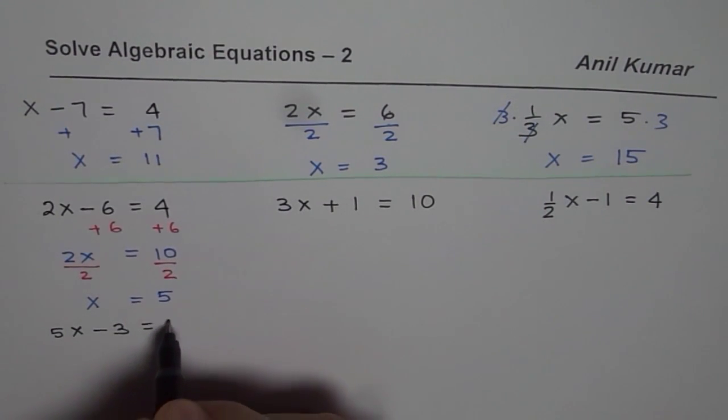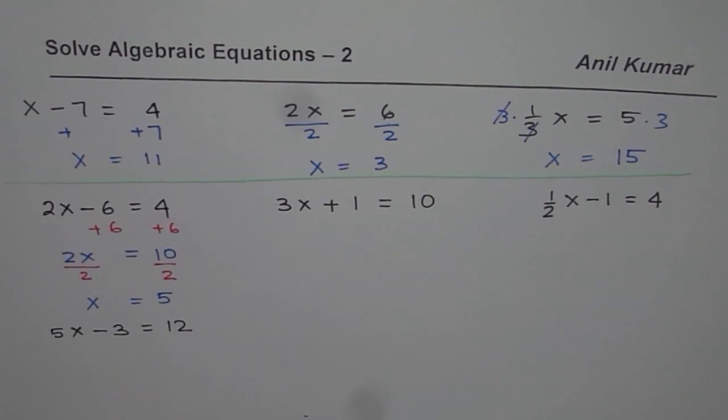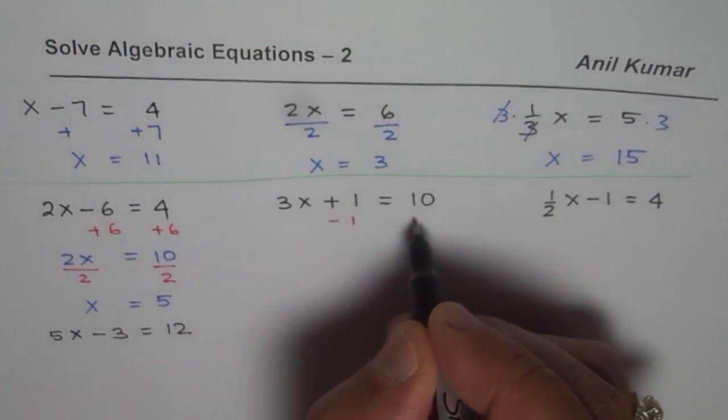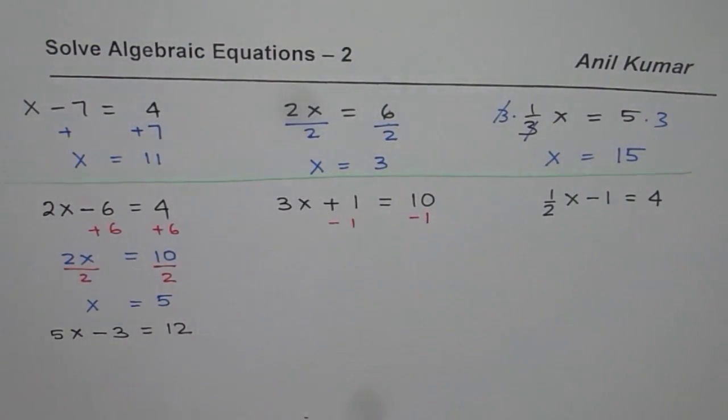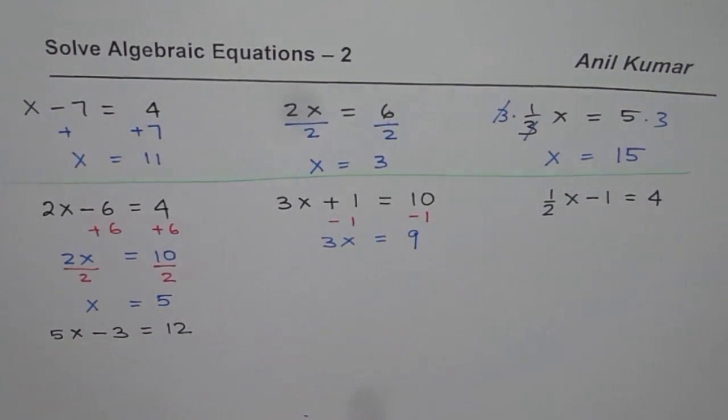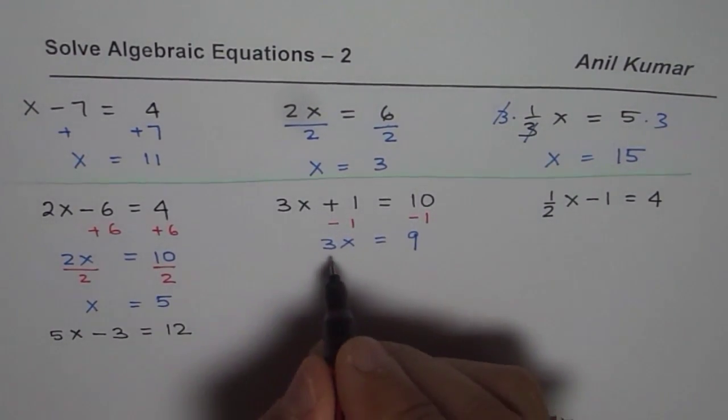Let's do the next one here. Since I have plus 1 I will do minus 1 both sides. After doing minus 1 I will get 3x equals 9. Then I have to divide by 3.